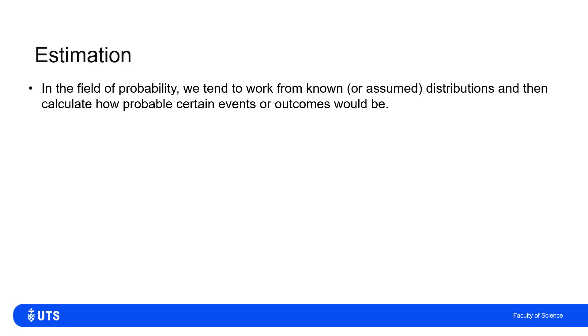In previous subjects that you may have done in probability, probability theory, the approach tends to be that we have some idea of the model that's driving what we're looking at. This might be, I know I'm flipping a fair coin 10 times, and the question might be, what's the chance that I get three heads? What's the chance I get the same number of heads as tails, or something like that? And we would use the model to work out how probable we think certain events would be.